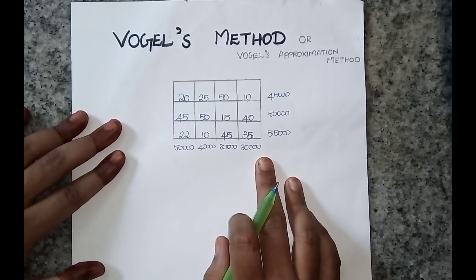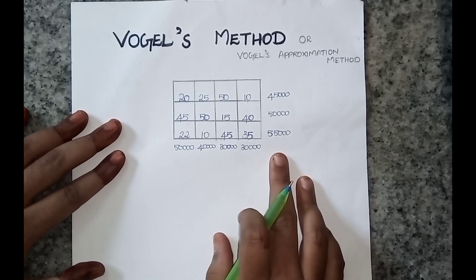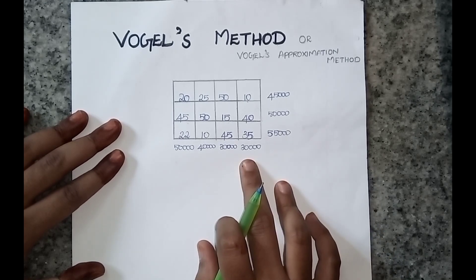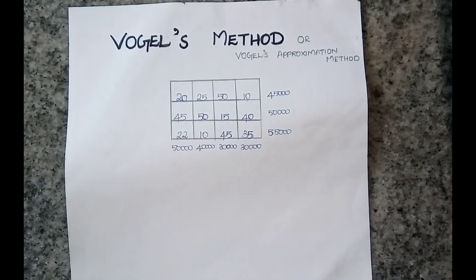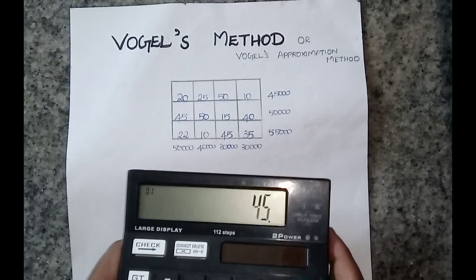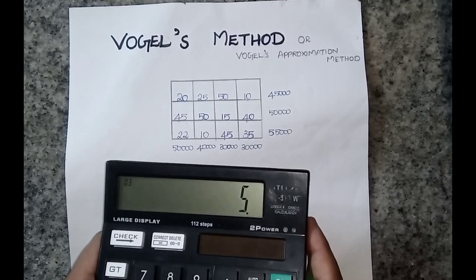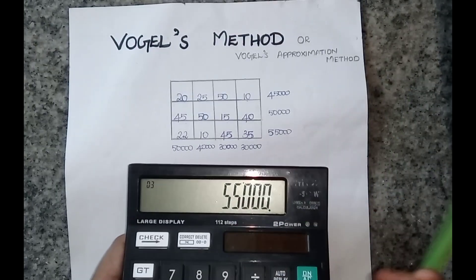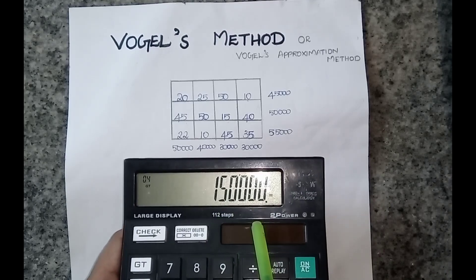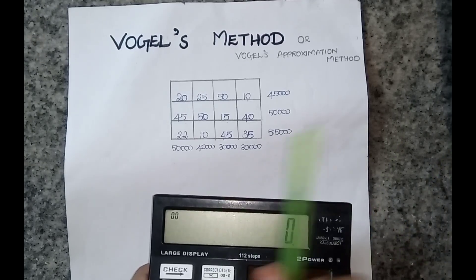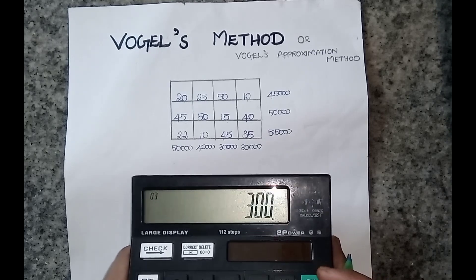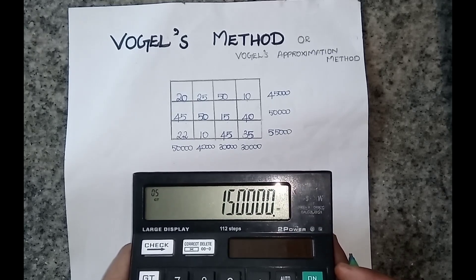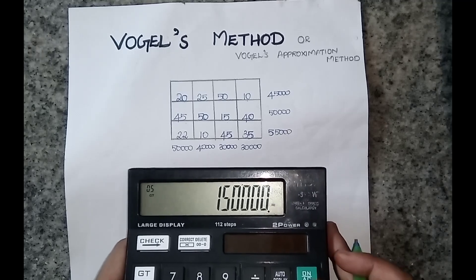To further continue Vogel's method, demand must equal supply. Let us calculate: the demand is 45,000 plus 50,000 plus 55,000, which gives 1,50,000. The supply is 50,000 plus 40,000 plus 30,000 plus 30,000, which is also 1,50,000. So demand and supply are equal.